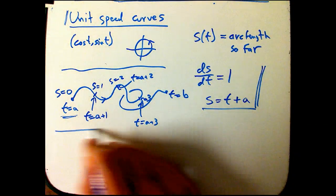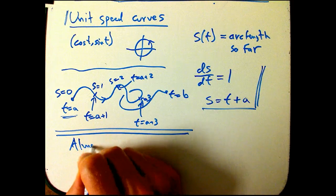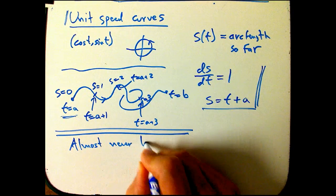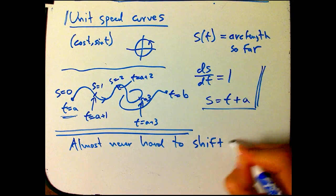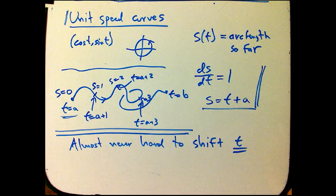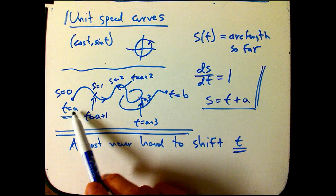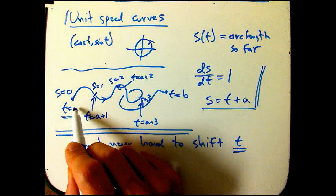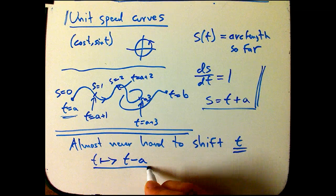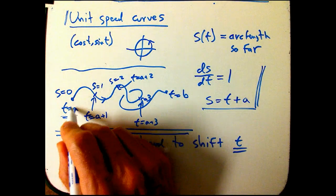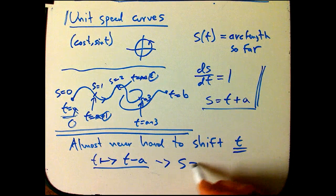And in fact, it's almost never hard, or almost never a bad idea, to redefine t just with a shift. And if we just shift t, and we'd redefine it and say, you know what, it'd be really convenient, we could just change our formulas a little bit. And we redefine t, and everywhere we see a t, we can subtract a, that means this is going to turn into zero, this will turn into one, this will turn into two. And then you'll just have s equal to t.